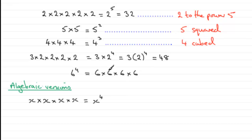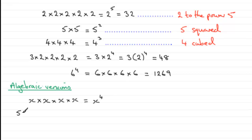Six times six is thirty-six, times another thirty-six gives one thousand two hundred and sixty-nine. Now suppose we go back to the algebraic versions. Suppose we had five e cubed — what's five e cubed going to mean? Well, five e cubed is short for five times e that is cubed, that is e times e times e.